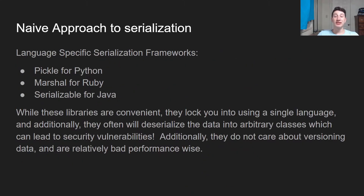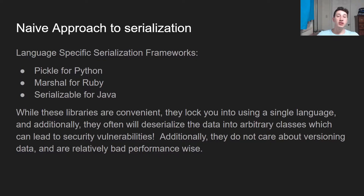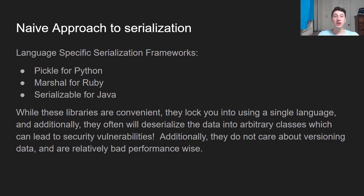So what's the naive approach to serialization? As it turns out, most programming languages actually have libraries built in to serialize objects — there's Pickle, Marshall, Serializable — but all of these are pretty bad in the sense that they pretty much limit you to one language. They're not very focused on performance, which is another issue. And additionally, they offer some security vulnerability in the sense that if someone with malicious intent can get you to de-pickle or de-marshall some arbitrary byte stream that they wrote, it might allow them to instantiate arbitrary classes and do things that you don't want them doing. So generally speaking, these language-specific serialization frameworks, while easy to use, are probably not the move.